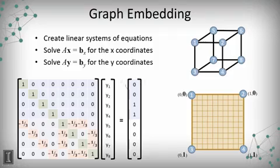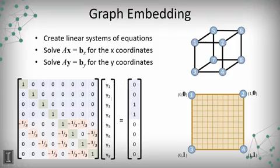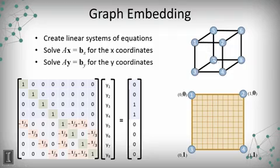We do the same thing for the y-coordinates. The By column vector equals the y-coordinates for nodes one, two, three, and four that I've placed, and then zeros for everything else. Node one has y-coordinate zero, node two has y-coordinate zero, node three has y-coordinate one, and node four has y-coordinate one. This sets up that the y-coordinate for node five equals y5 minus one-third times y1, minus one-third times y6, minus one-third times y7, and so on for the remaining nodes.